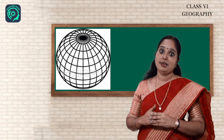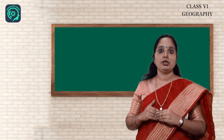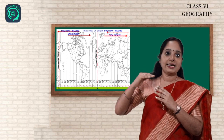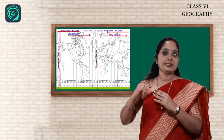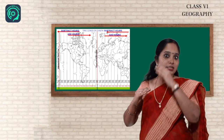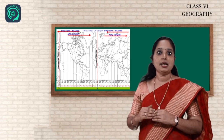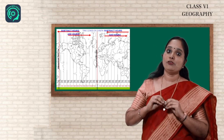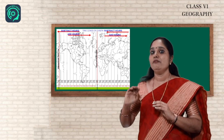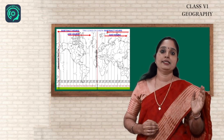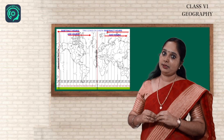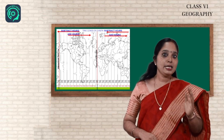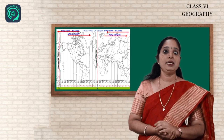Apart from finding or locating places, we can also determine time using longitude. When the prime meridian of Greenwich has the sun exactly overhead, that time is 12 noon at Greenwich — and for all places on the same longitude it will also be 12 noon. The earth rotates west to east and takes 24 hours to complete one rotation of 360 degrees. Places eastward have time ahead of Greenwich and those westward are behind. If any place is located 15 degrees east, its time will be 1 pm when it is 12 noon in Greenwich; and any place 15 degrees westward will have a time of 11 am.